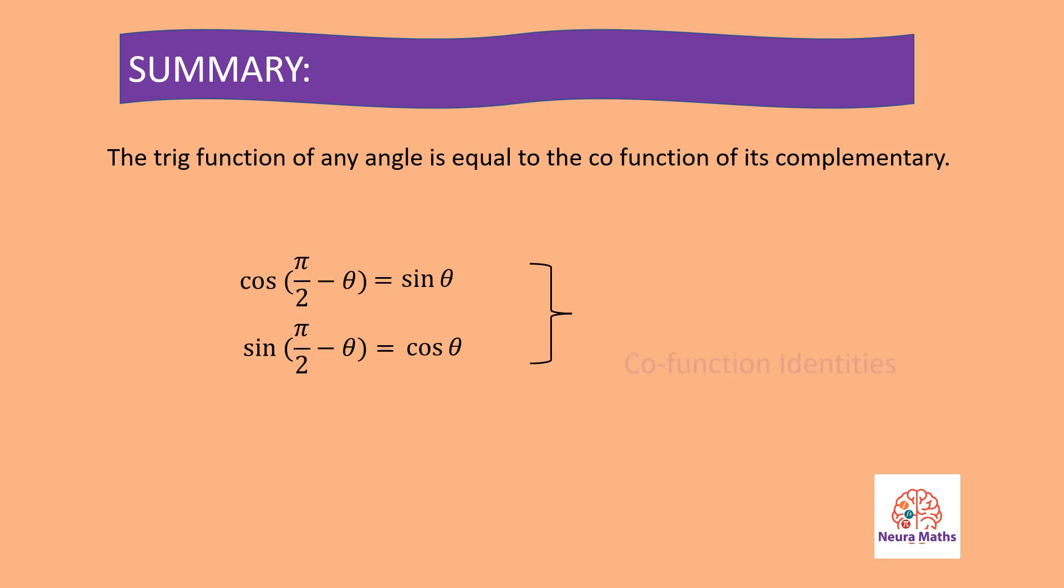To sum up, the trig function of any angle is equal to the co-function of its complementary. These identities are called the co-function identities. Next, we will see more trigonometric identities.